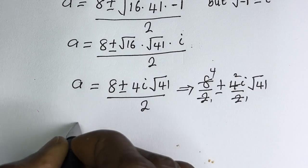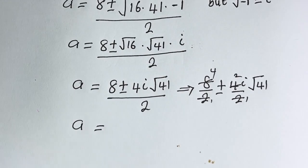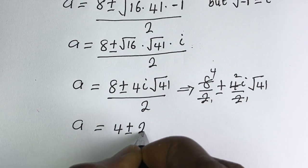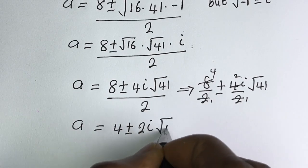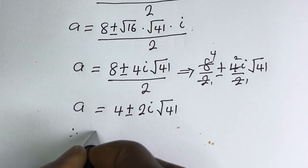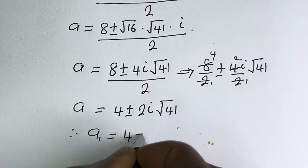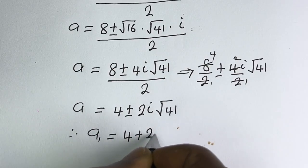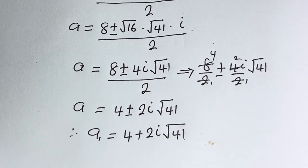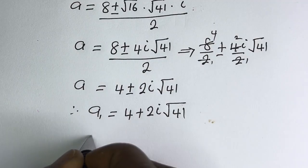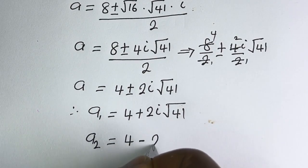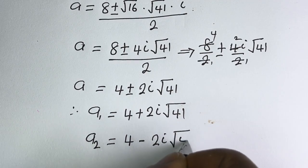Therefore A equals 4 plus or minus 2i square root of 41. So A1 equals 4 plus 2i square root of 41, and A2 equals 4 minus 2i square root of 41. These are the values of A.